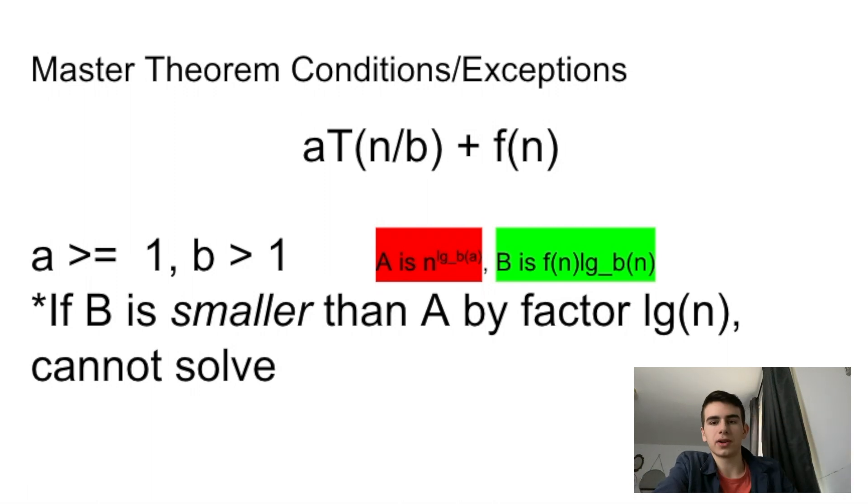And then the B has to be greater than one, obviously, because you have to scale down your problem. You can't be scaling it up. That would just run forever.